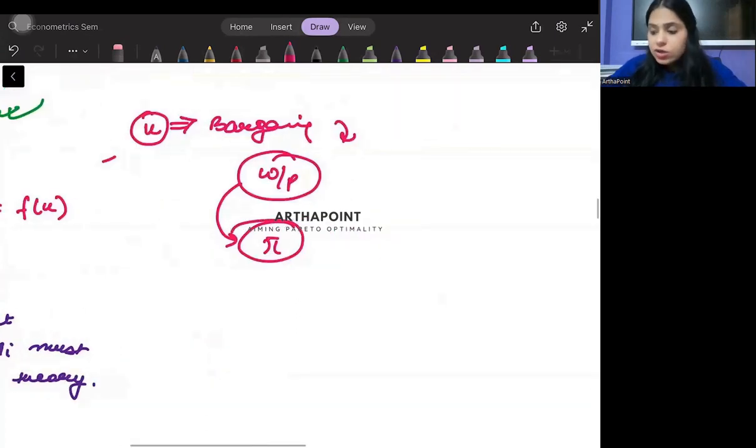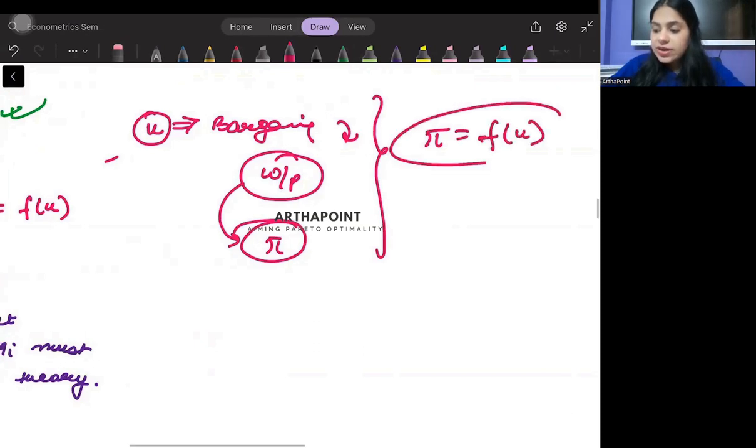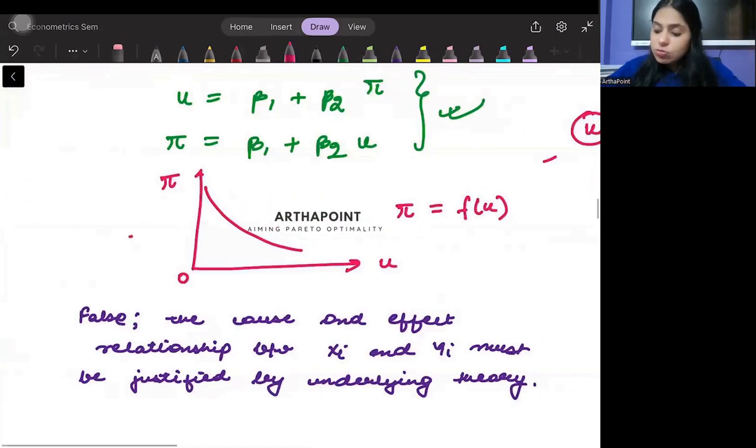So it is macroeconomic theory which tells me that inflation should be a function of unemployment rate and not vice versa. This is given to me by Phillips curve, which is a theoretical concept. This is not given to me mathematically through regression.